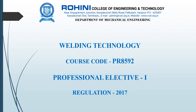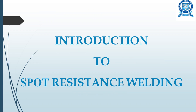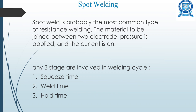Welcome to the Welding Technology course, course code PR8592, a professional elective subject for the regulation 2017. In this unit — Unit 2 — we will be studying the resistance welding process, which includes spot welding, seam welding, projection welding, resistance butt welding, flash butt welding, percussion welding, and high frequency resistance welding. We will also study the advantages, limitations, and applications of each process.